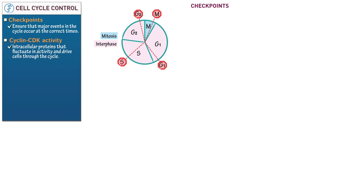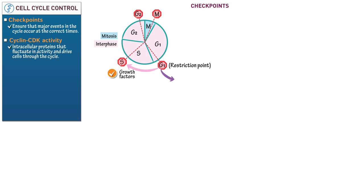Let's learn how each checkpoint prevents errors in the cell cycle. The G1 checkpoint is also called the restriction point — in yeast, it is known as start. Show that the G1 checkpoint can direct the cell in one of two ways depending on whether growth factors are present: if they are, the cell progresses to the S phase; if they are not, the cell enters a quiescent phase called G0.